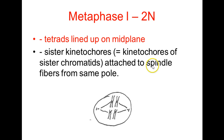In metaphase 1, the cell is diploid. These tetrads line up around the midplane of the cell, and the sister kinetochores — that is, kinetochores of sister chromatids — attach to spindle fibers from the same pole. So these two sister chromatids are attached to spindle fibers from one pole, as opposed to what happened in mitosis where they attach to opposite poles. The other homolog's two sister chromatids are attached to the other pole.